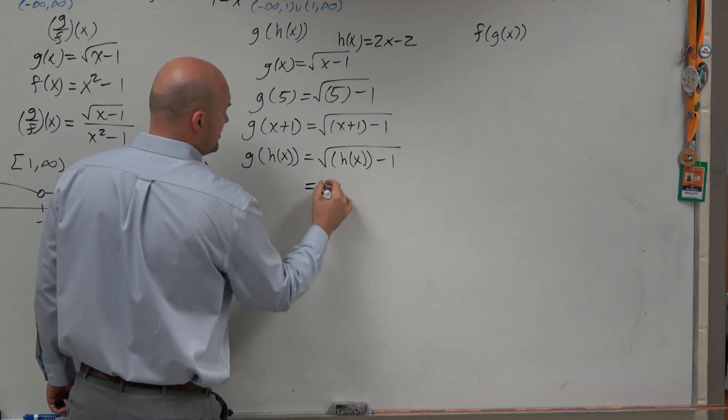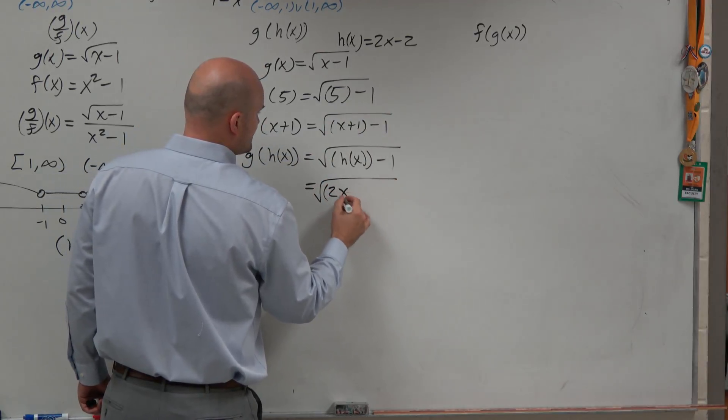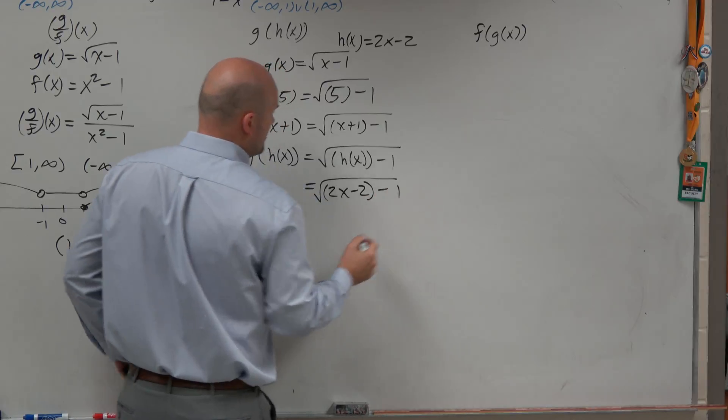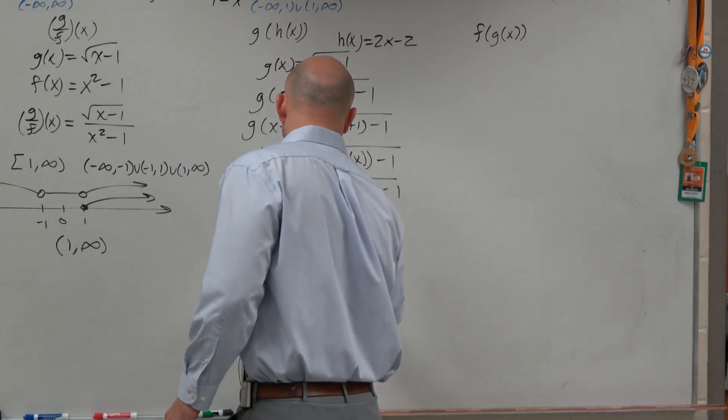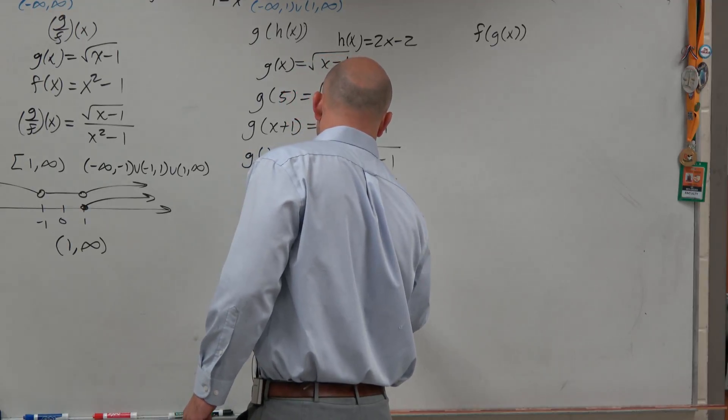So now I'm going to plug in h of x, which is 2x minus 2, minus 1. And then I just go ahead and simplify, which is 2x minus 3.